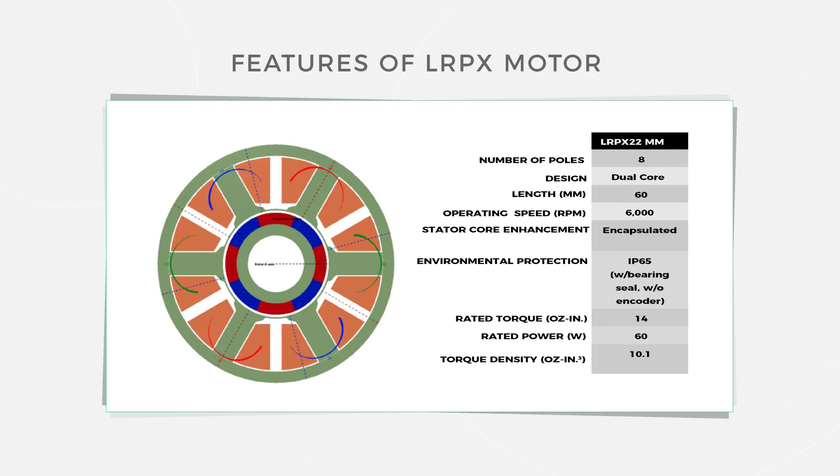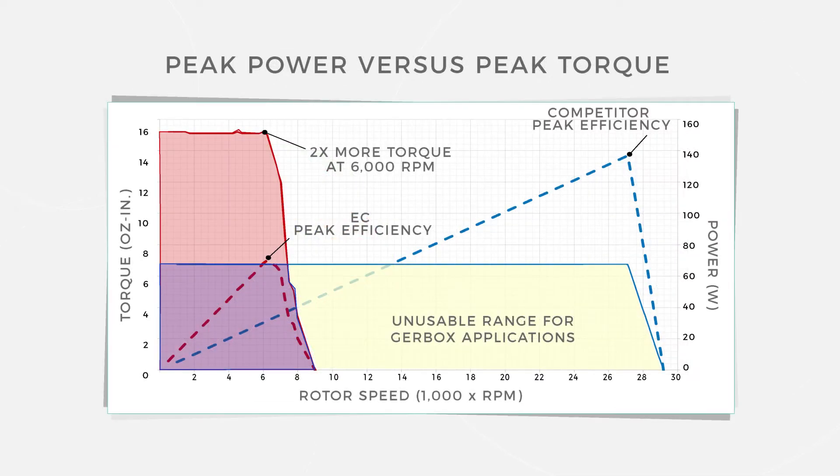An 8 pole design makes for higher torque density, and peak motor efficiency is within gearbox speed range. More specifically, there's up to twice the torque within the gearbox speed range than with traditional setups.